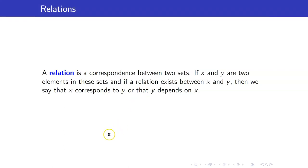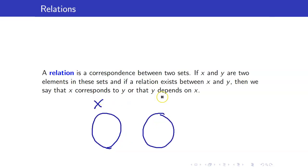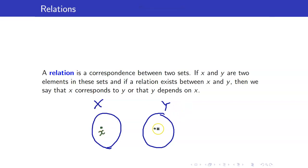A relation is a correspondence between two sets. Suppose we have two sets, capital X and Y. If x is an element of capital X and small y is an element of Y, and a relation exists between x and y, we represent it like that. We say that x corresponds to y, or that y depends on x.